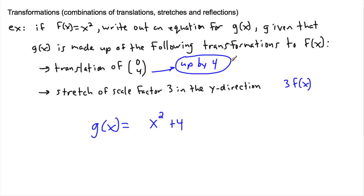What up by four means is take your function and add four to it. Stretch of scale factor three means chuck a three in front of it, three f(x). Now f(x) is just x squared, so this becomes three times x squared, and this is my answer.